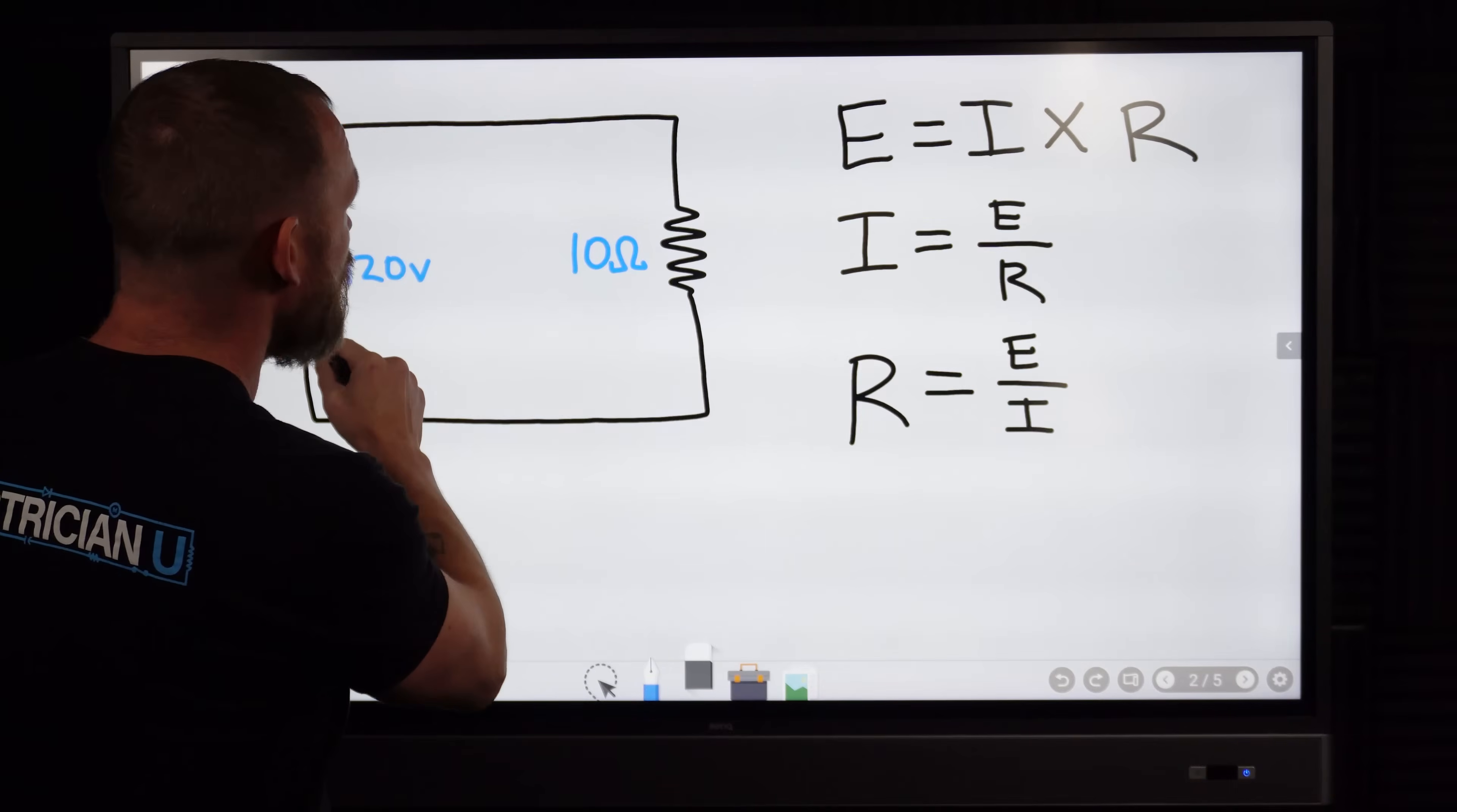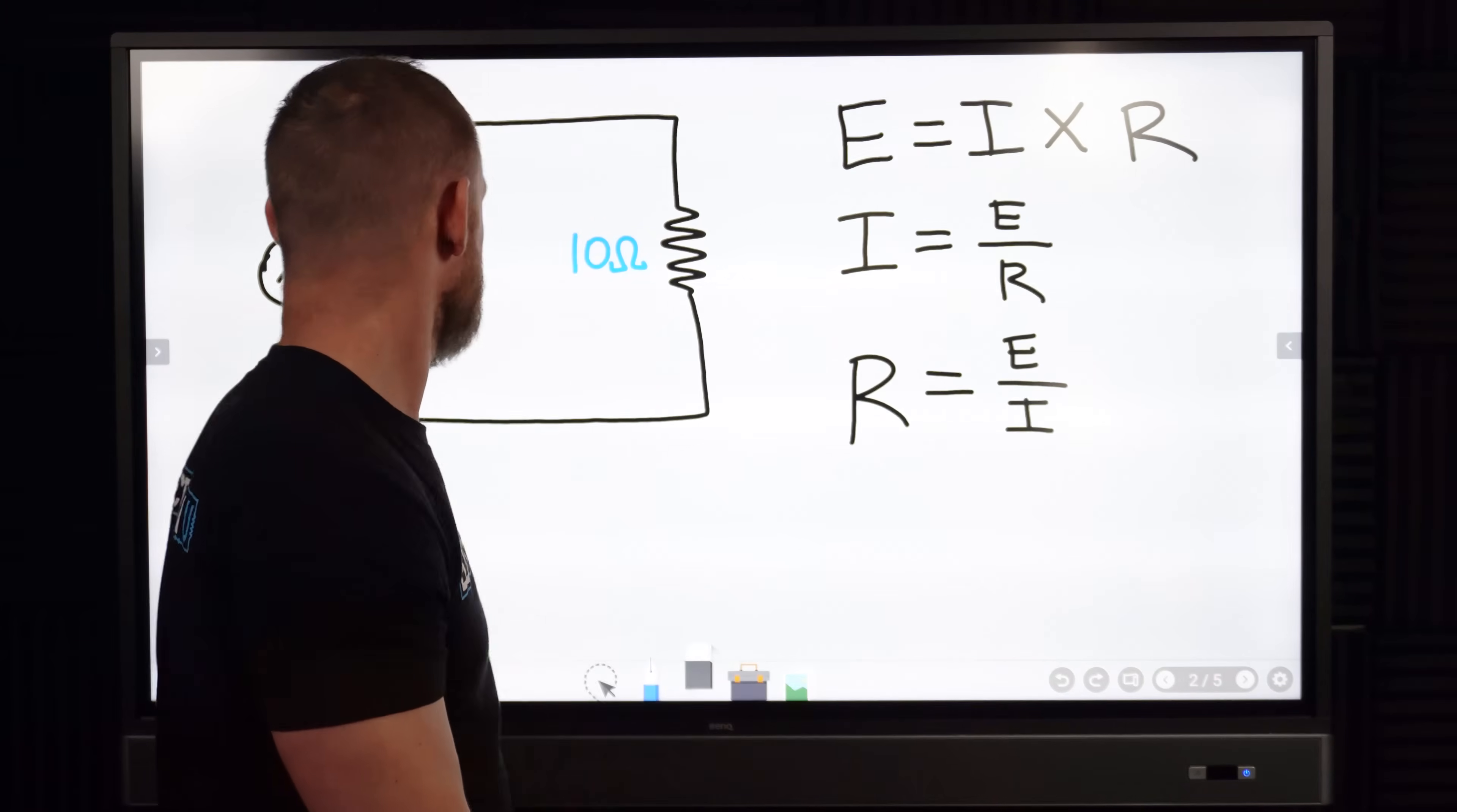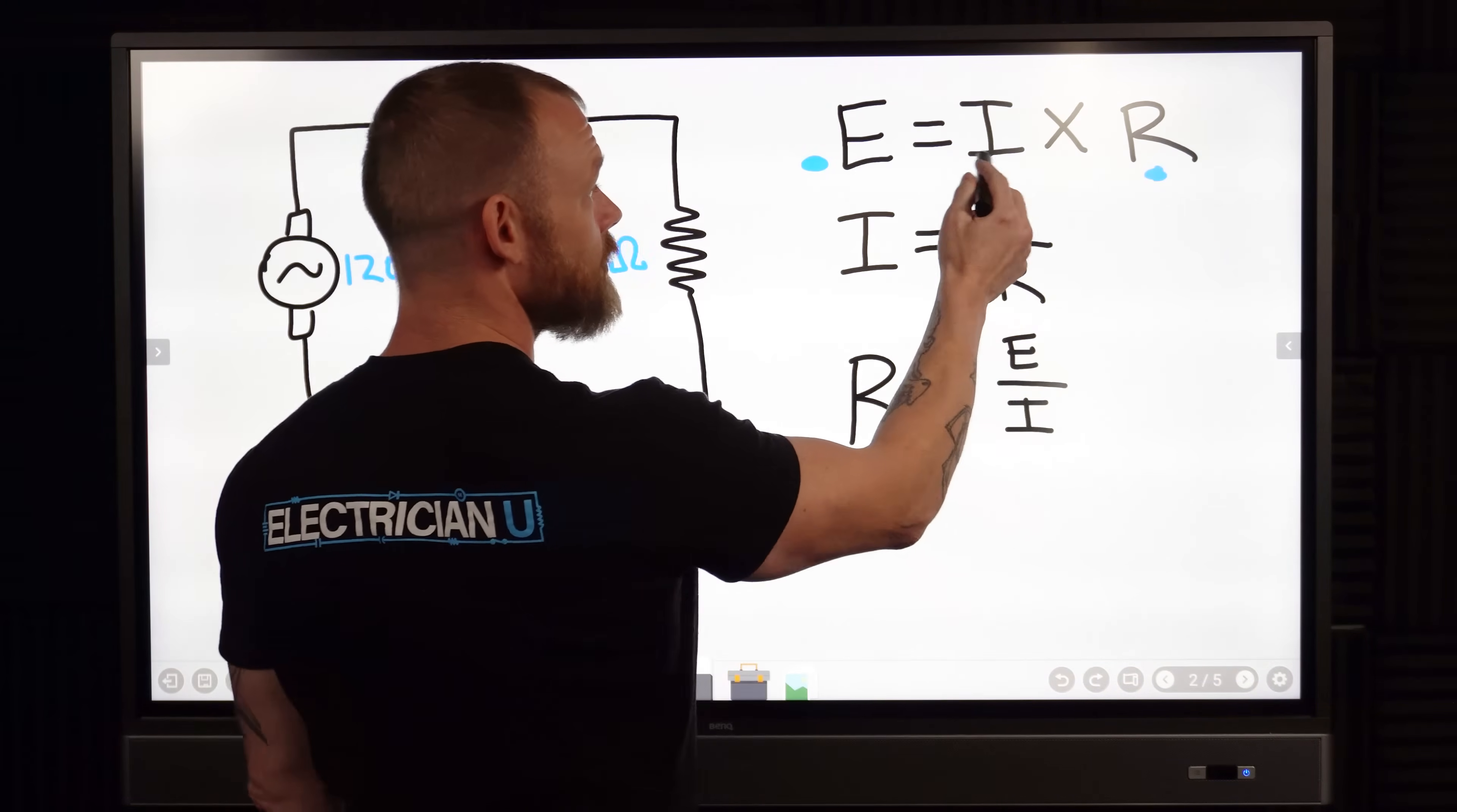So if we have a circuit and we know, we took our multimeter out and we tested the resistance of this certain resistor and we didn't want to turn current on, we wanted to know what kind of current we should expect. We know we have 120 volt circuit so we have our voltage. We know the resistance because we went to resistance on our multimeter and we actually tested the resistance here, so we know the resistance value.